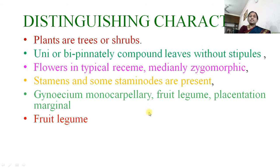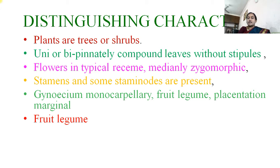The distinguishing characters of this family: most of the plants are trees or shrubs. They have uni- or bipinnately compound leaves without stipules — this is a very important characteristic feature of Caesalpiniaceae. Flowers are in typical racemes, with the median petal zygomorphic, which is also one of the most important characters. Stamens and some staminodes are present; the number of stamens is not fixed, but staminodes are always present in the flower.